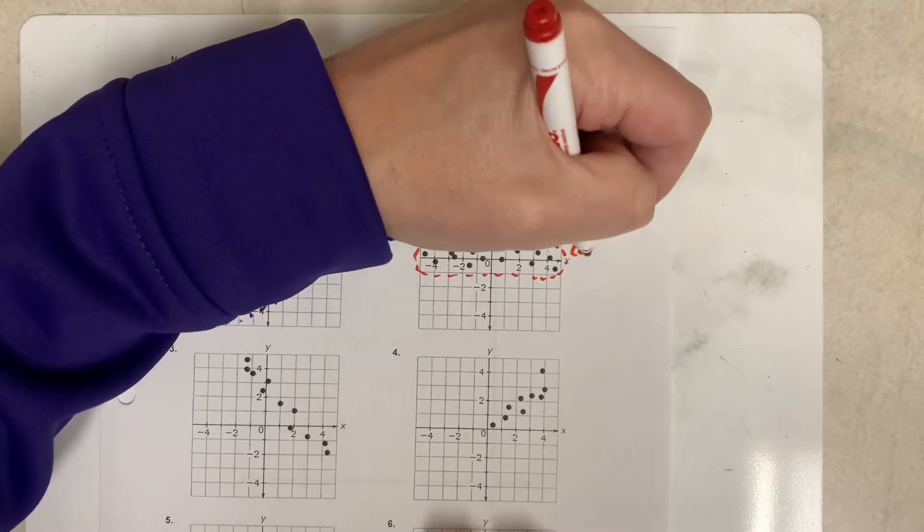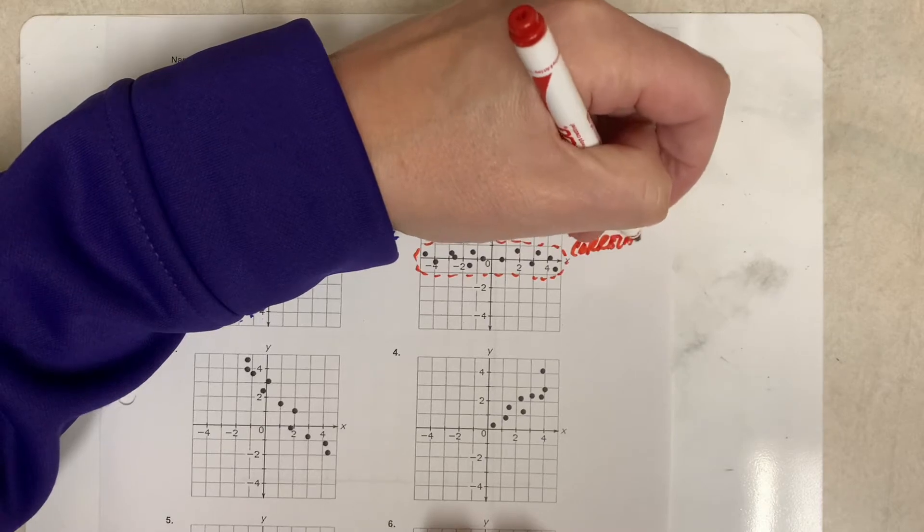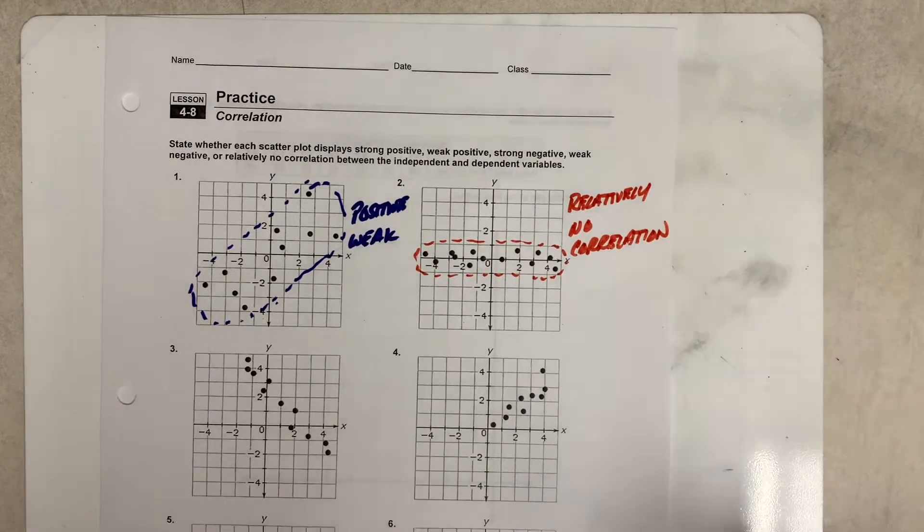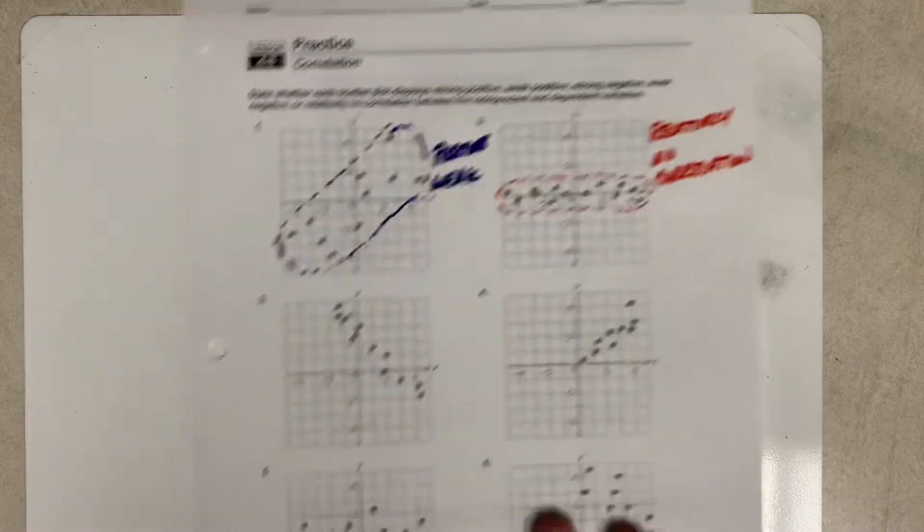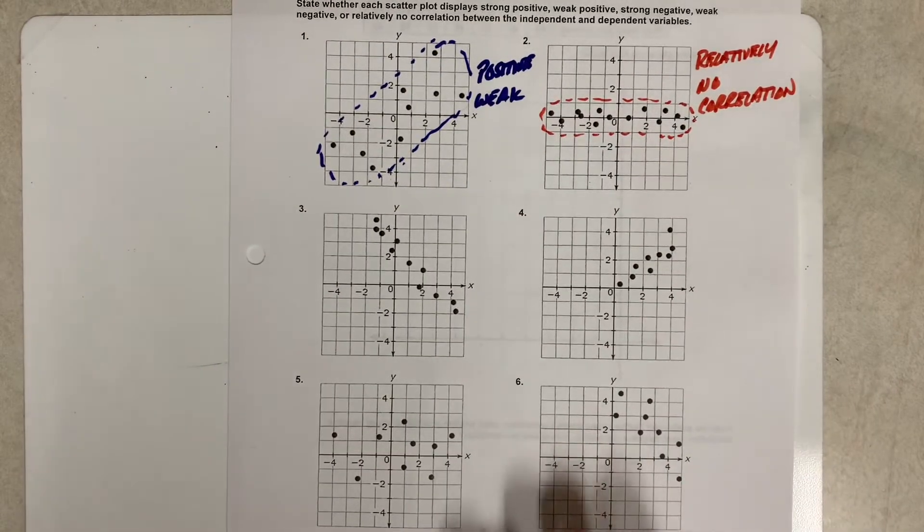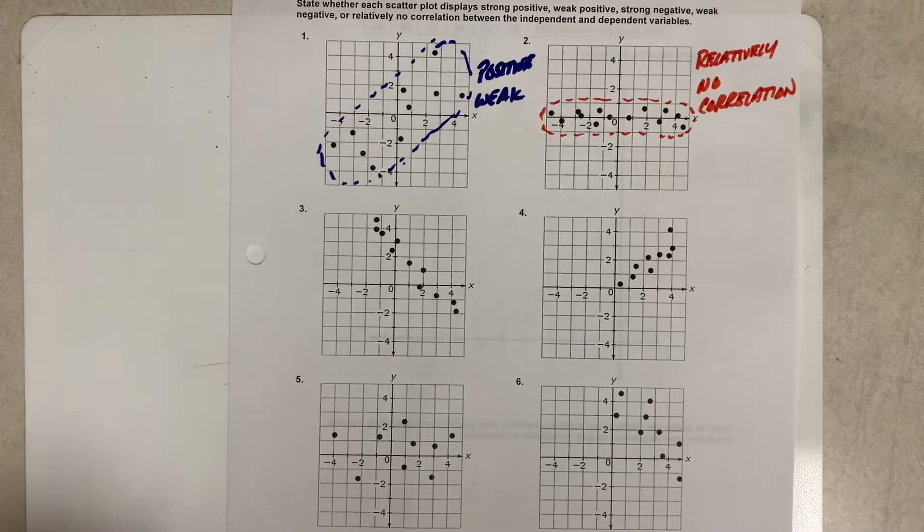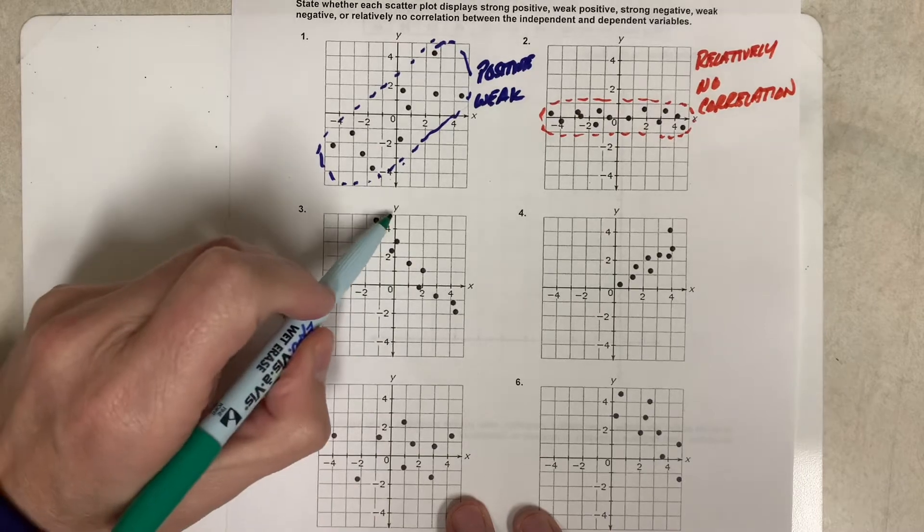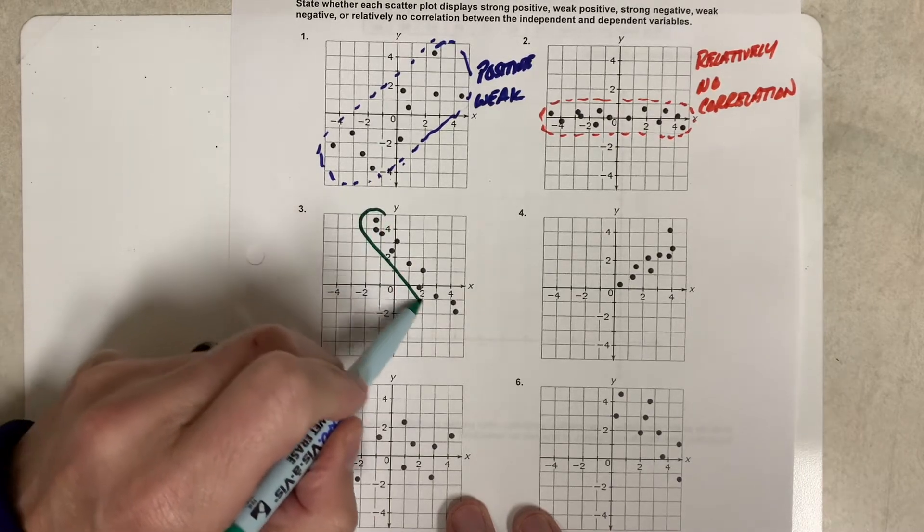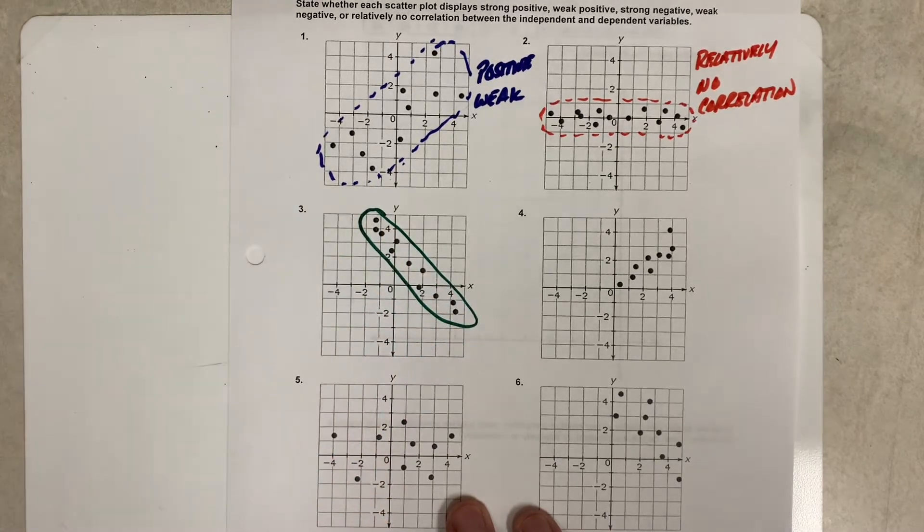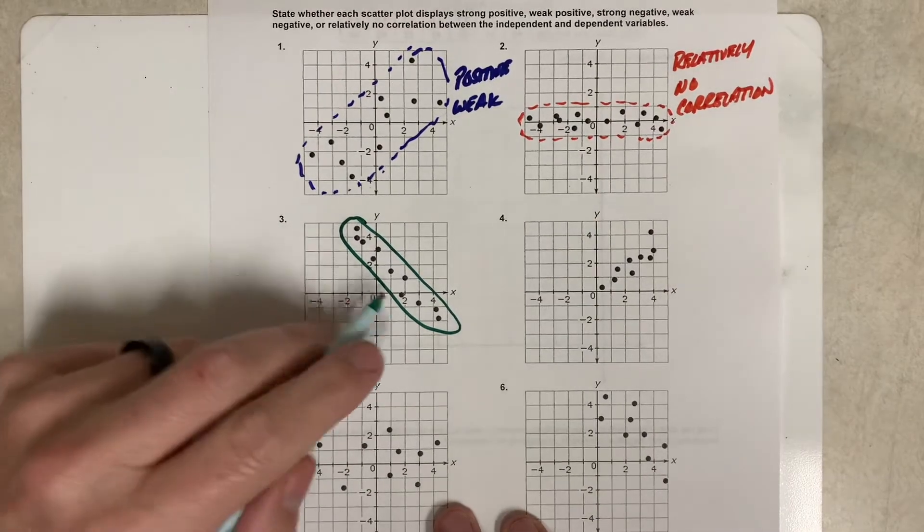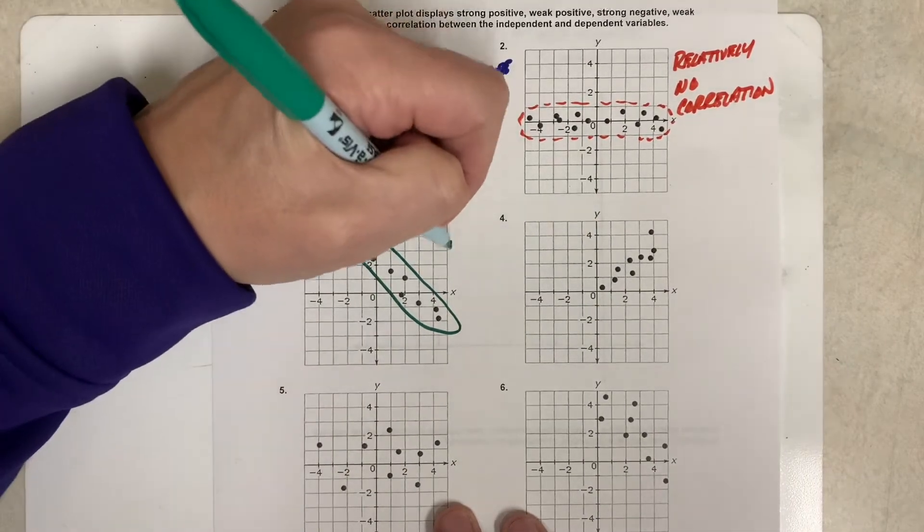All right, let's take a look at number three. This time, number three has our dots kind of going in this downward direction from negative to positive, from left to right, and they are pretty tightly packed together. So that was what we call negative correlation. That would be negative, and that would be strong because they're pretty tightly packed together.